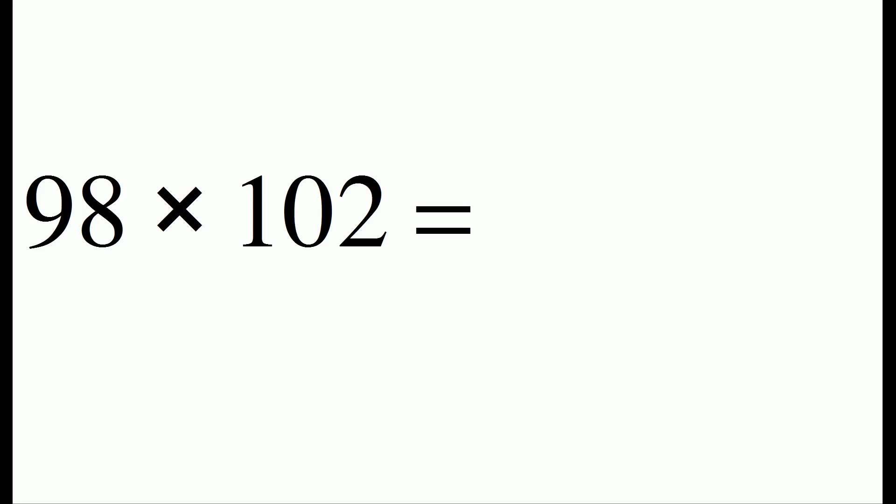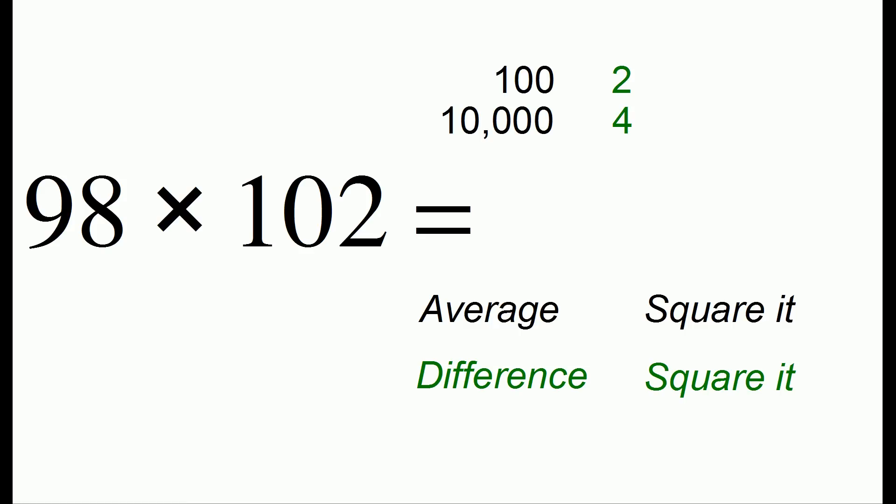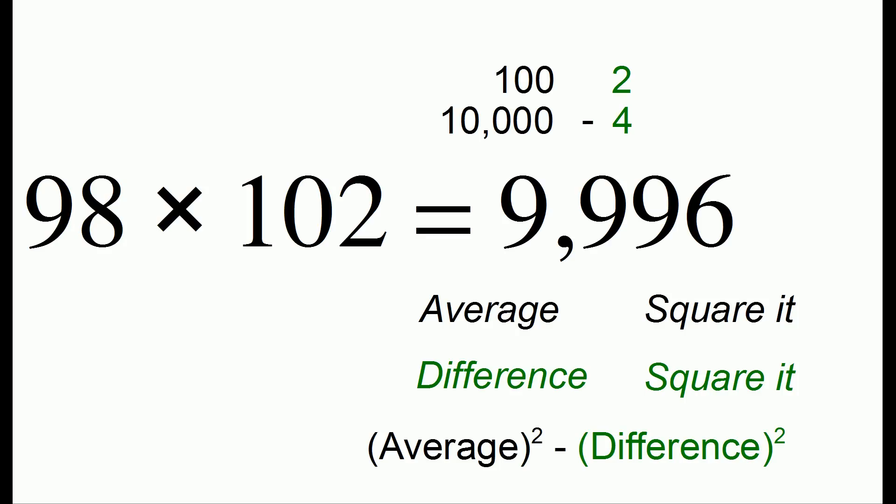Let's do 98 times 102. The average is 100, which we then square, which gets us 10,000. The difference from the average is 2 squared is 4. And when we take the difference, we get the answer of 9,996.